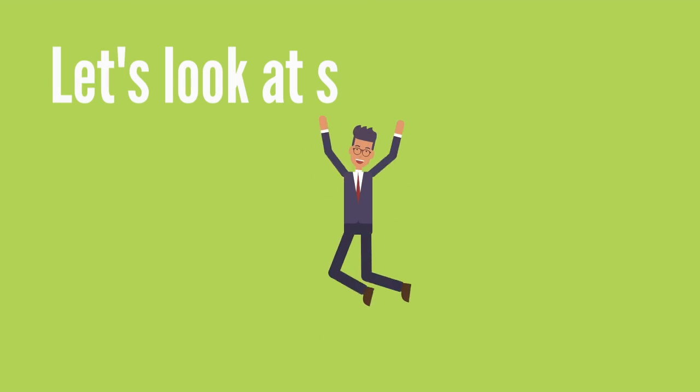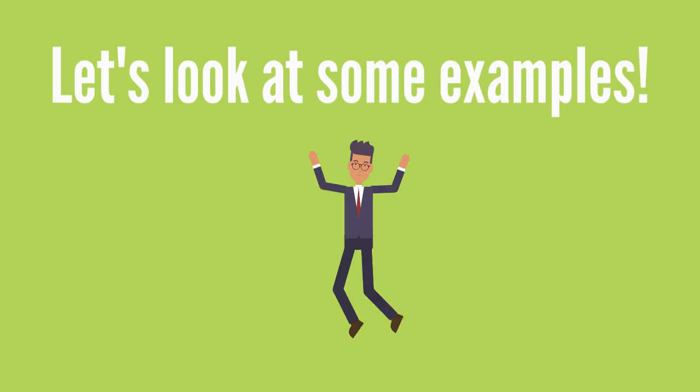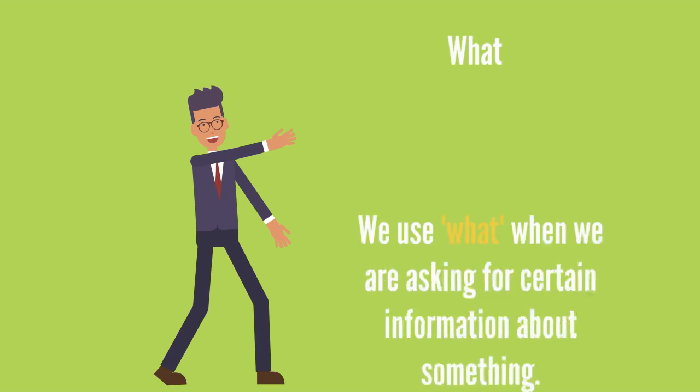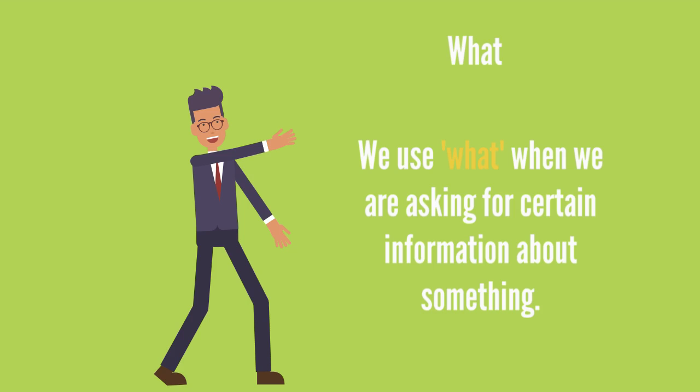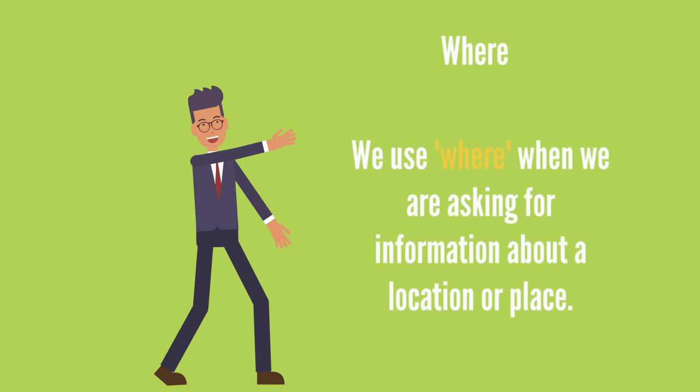Let's look at some examples. What? We use what when we are asking for certain information about something. Where? We use where when we are asking for information about a location or place.